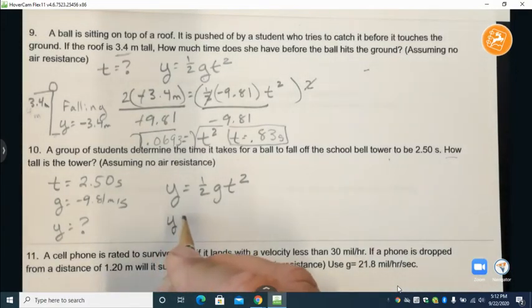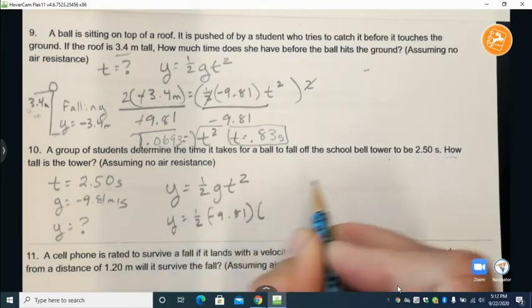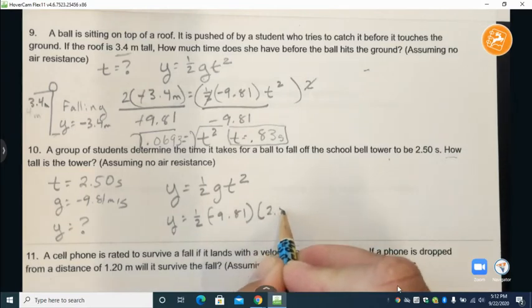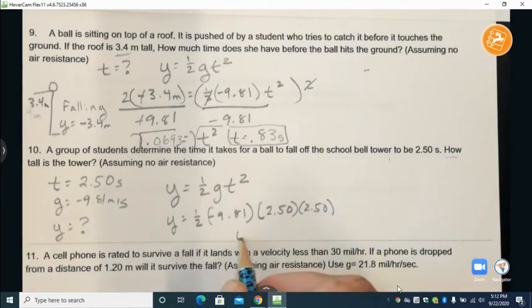So y equals one-half negative nine point eight one times the time squared which is 2.50 and we will find our y.